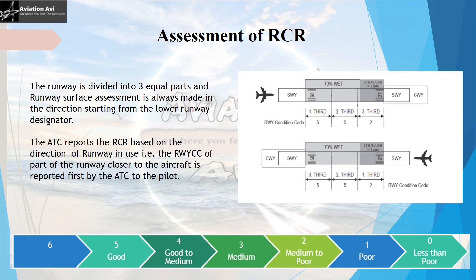The ATC reports the runway condition report based on the direction of the runway in use — that is, the runway condition code of the part of the runway closer to the aircraft is reported first by ATC to the pilot. So if runway 09R is the runway in use, the runway condition code is reported for the first third first, then the second and third.